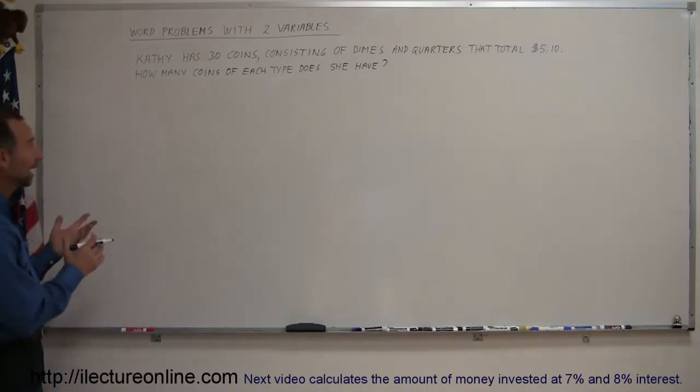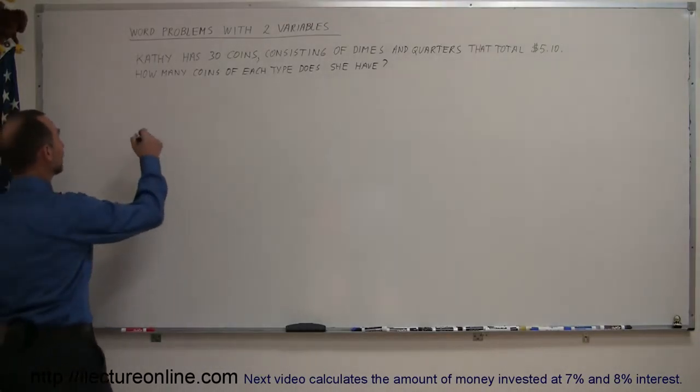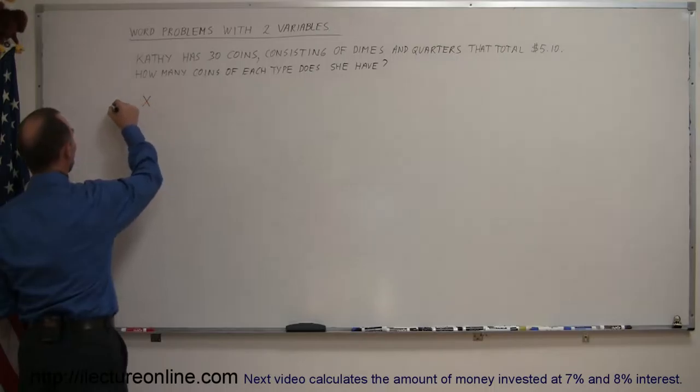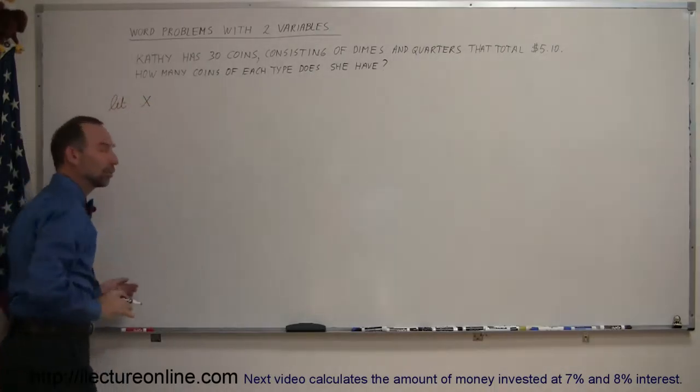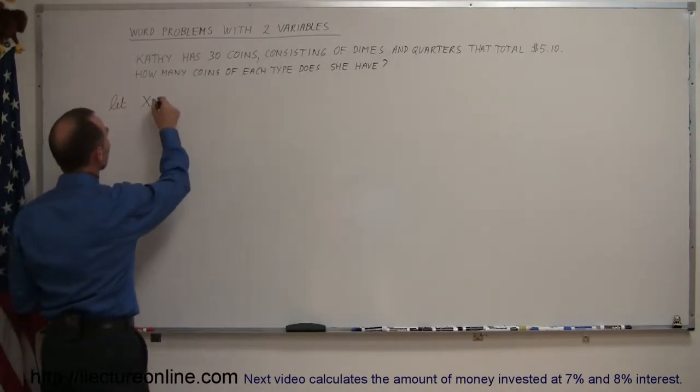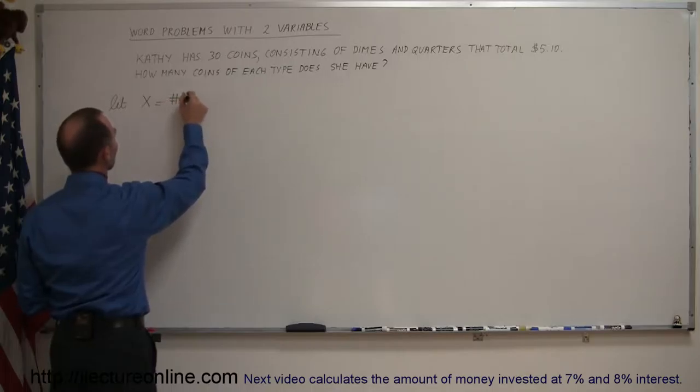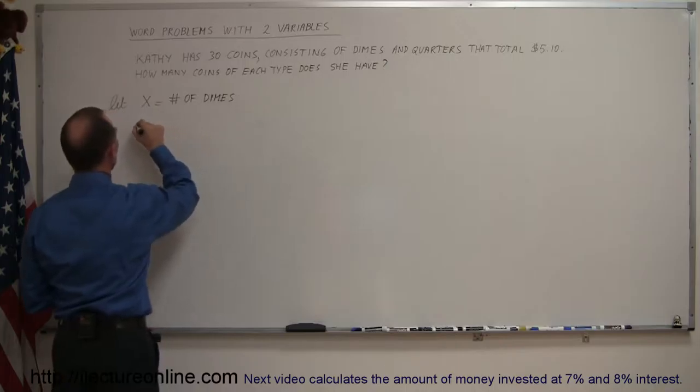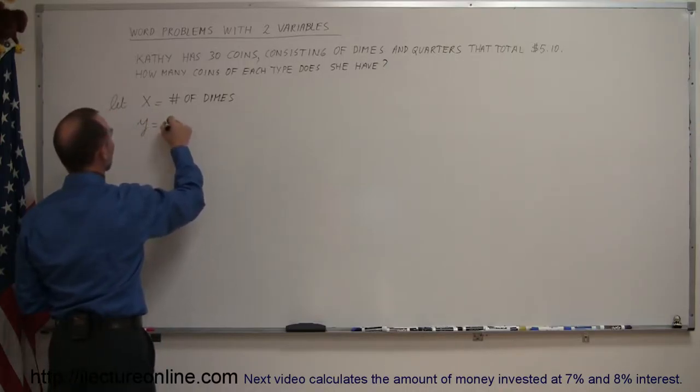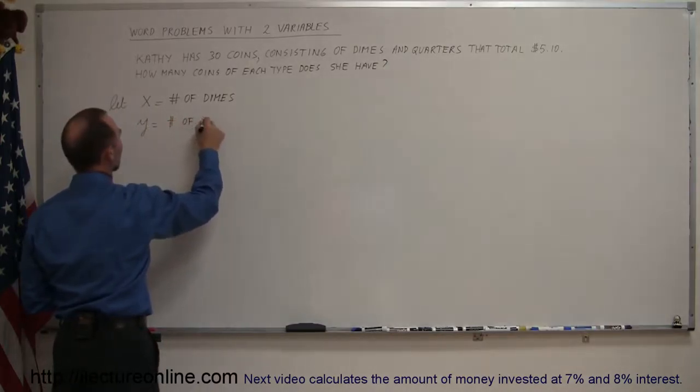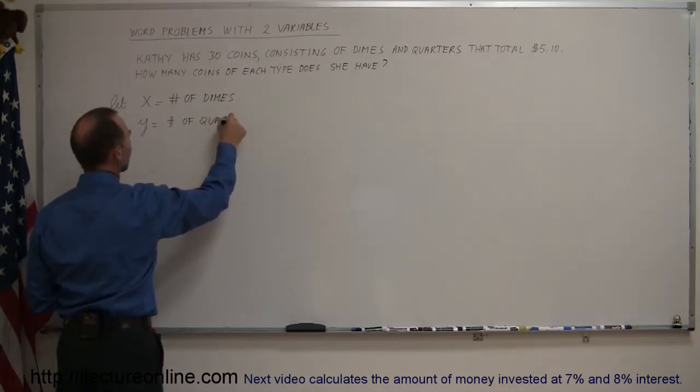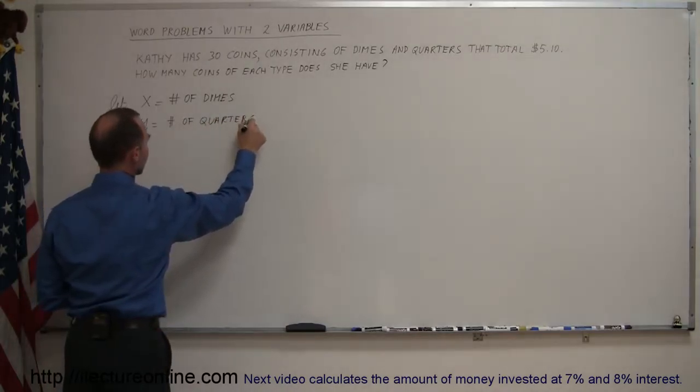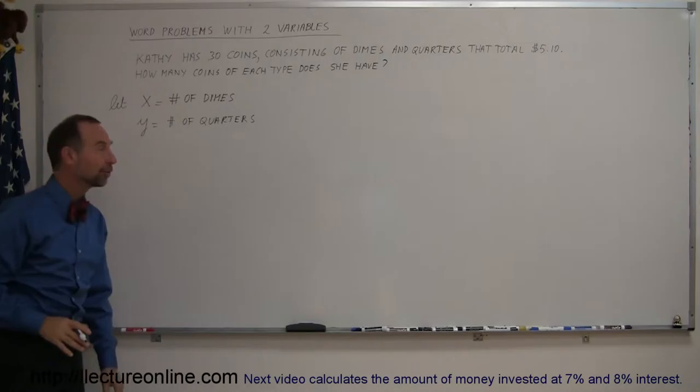Since we have two different variables, we're going to define them very carefully. Let x equal, and it's always a good idea to write that out, let x equal the number of dimes. And then we use the variable y, let that represent the number of quarters. This is a very important step, never to be omitted. Always be very careful to define your variables.